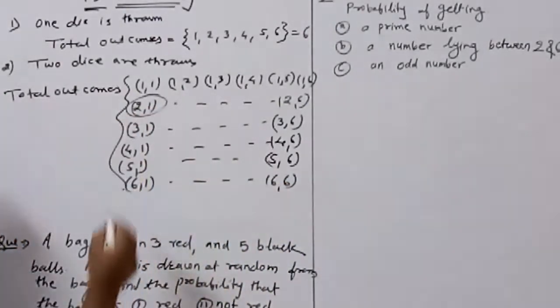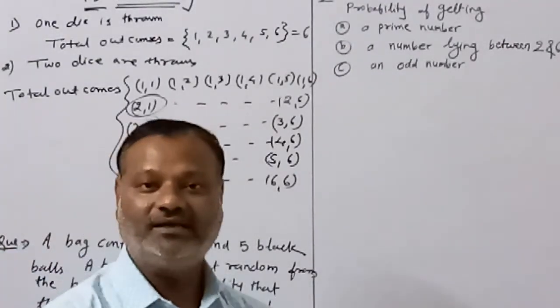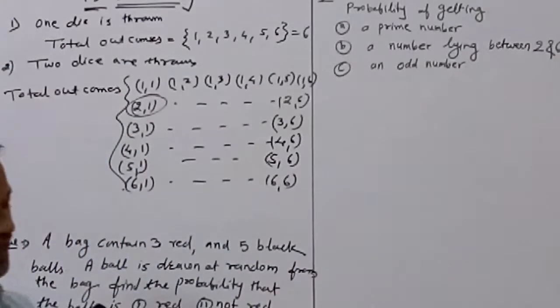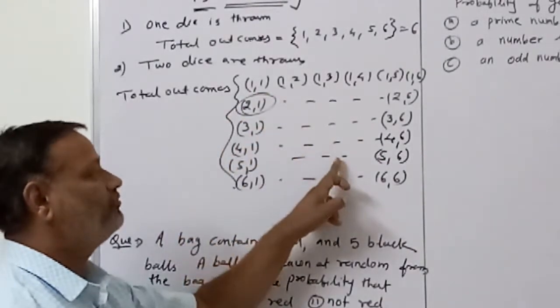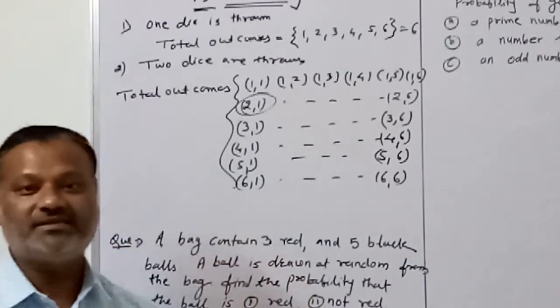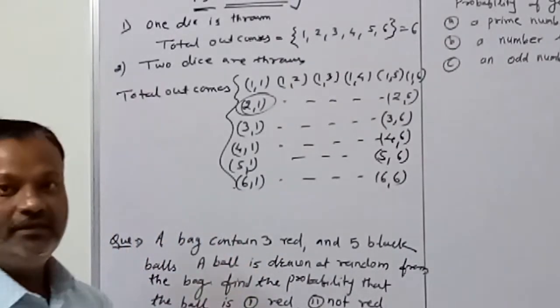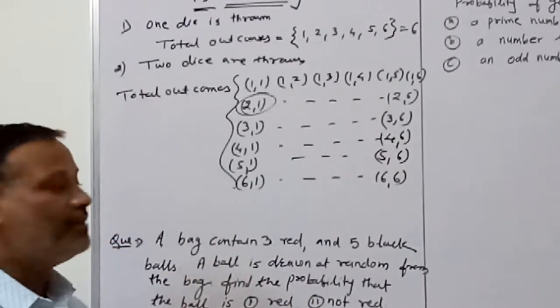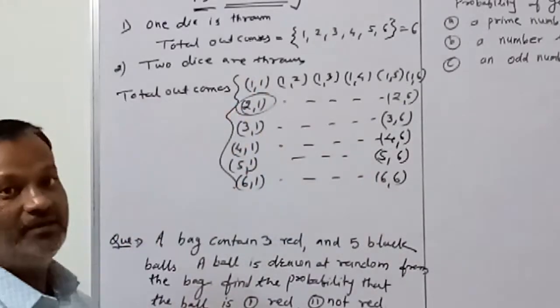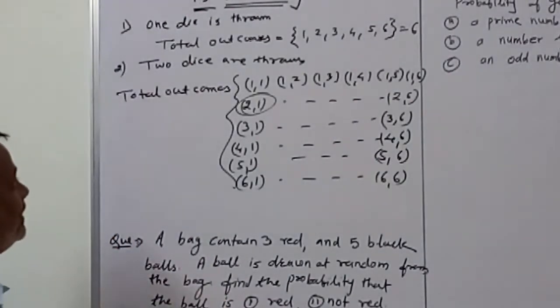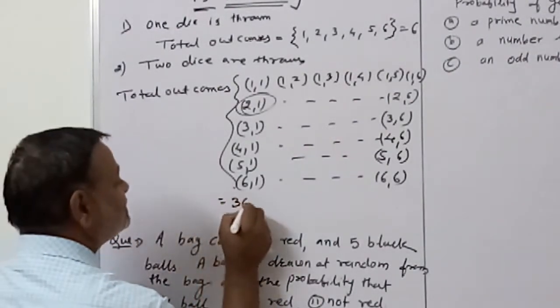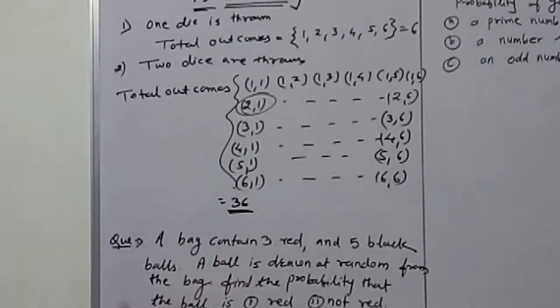Note that the equal numbers on both faces are: (1,1), (2,2), (3,3), (4,4), (5,5), (6,6). The maximum sum of the two numbers is twelve and the minimum is two. The total number of outcomes when two dice are thrown is thirty-six.